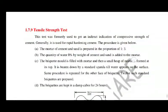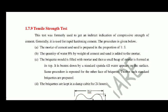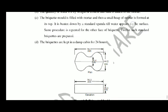The tensile strength test was formerly used to get an indirect indication of the compressive strength of cement. This test is generally done on rapid hardening cement. As per the given figure, briquette-shaped metal molds are used for testing the tensile strength of cement.